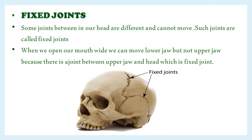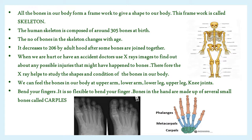Observe the picture. Children, all the bones in our body form a framework to give a shape to our body. This framework is called a skeleton. The human skeleton is composed of around 305 bones at birth. The number of bones changes with age — it decreases to 206 by adulthood after some bones are joined together.